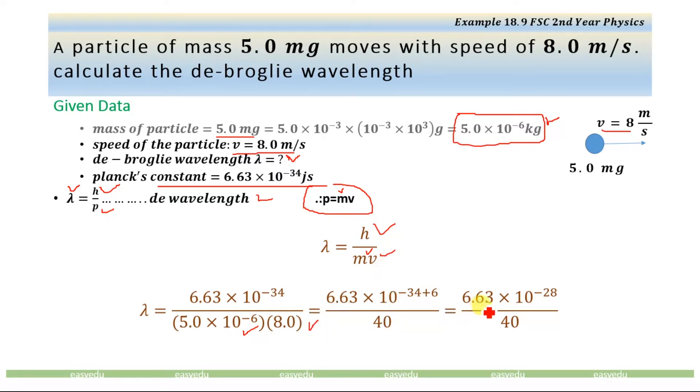And solving we will have 6.63 × 10⁻²⁸ divided by 40. Now further solving this, we will get that de Broglie wavelength is equal to 1.66 × 10⁻²⁹ meter. And in standard form we will have 1.66 × 10⁻²⁰ nanometer.